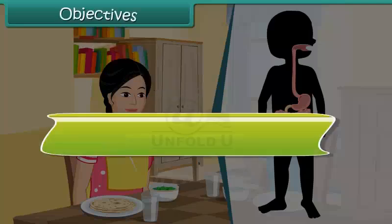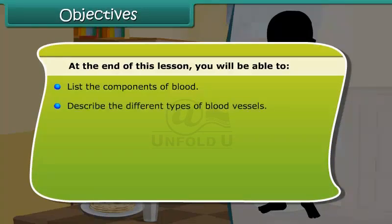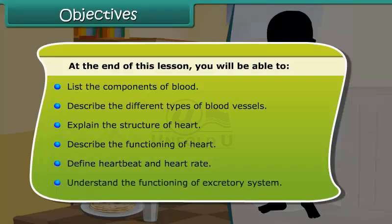At the end of this lesson, you will be able to: list the components of blood; describe the different types of blood vessels; explain the structure of the heart; describe the functioning of the heart; define heartbeat and heart rate; and understand the functioning of the excretory system.